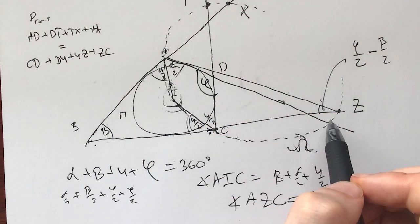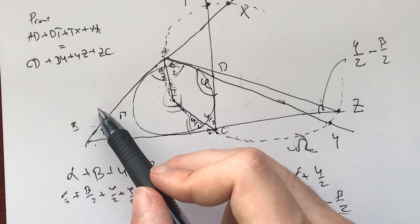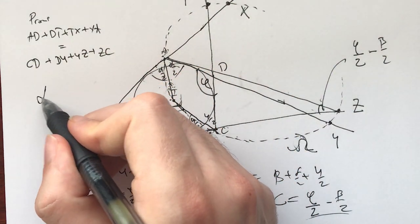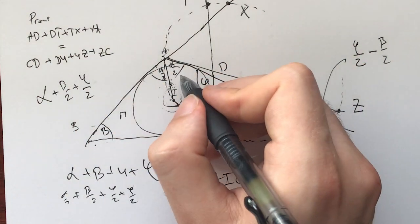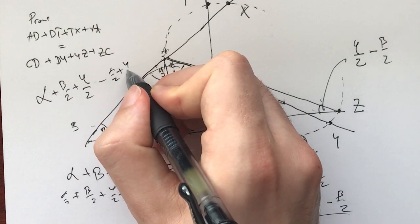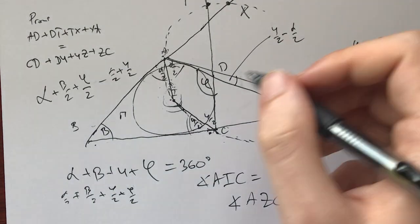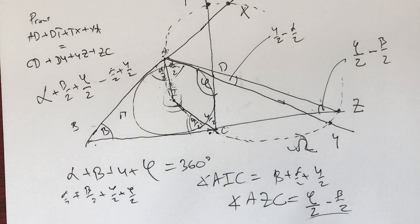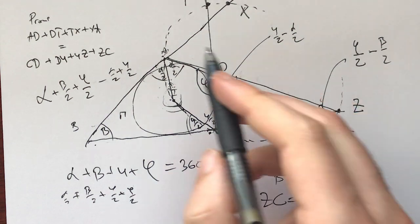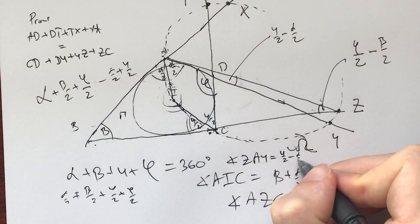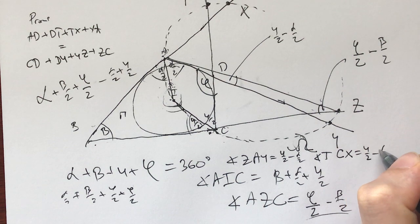So this is phi minus beta over 2. And now what do we have? We have ZAY. We can get it because what do we have? We have alpha in this triangle ZAB, we have beta, we have minus beta half. So we have an alpha, we have half of beta, we have half of phi. And that means we need to subtract alpha half and add gamma half. So that means this angle is gamma half minus alpha half.